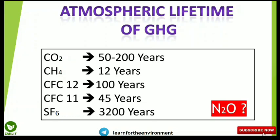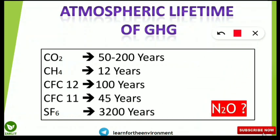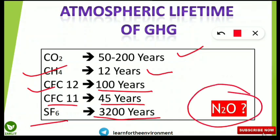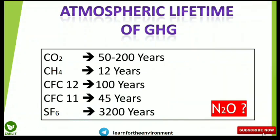The atmospheric lifetimes of important greenhouse gases are: CO₂ = 50–200 years (note: GWP = 1 but lifetime is not 1); CH₄ = 12 years; CFC-12 = 100 years; CFC-11 = 45 years; SF₆ = 3200 years. Comment your answer for the atmospheric lifetime of N₂O (nitrous oxide). Don't forget to like, subscribe, and check the playlist for more environmental chemistry videos. Keep smiling and believe in yourself!